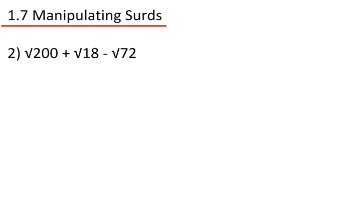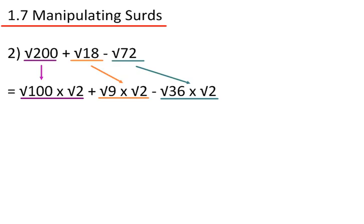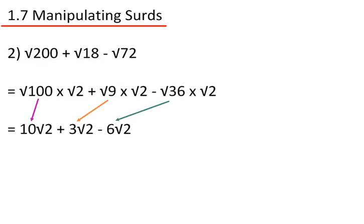Root 200 plus root 18 minus root 72. Again, I need to find the largest square numbers that go into these numbers, which is root 100 times root 2, root 9 times root 2, and root 36 times root 2. The square root of 100 is 10, giving me 10 root 2. The square root of 9 is 3, giving me 3 root 2. And the square root of 36 is 6, giving me 6 root 2. 10 root 2 add 3 root 2 is 13 root 2. Take away 6 root 2 gives me 7 root 2.